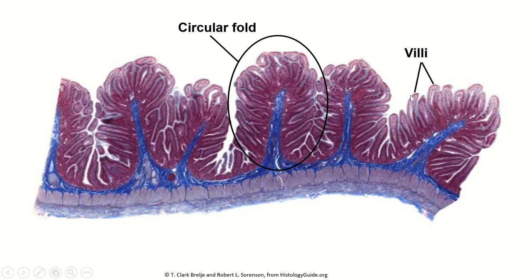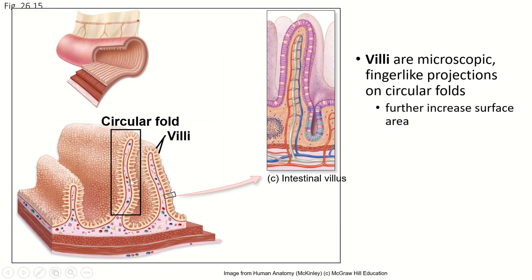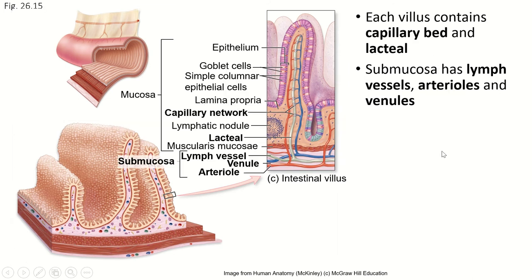The structures on top that make up the mucosa — these little finger-like projections — are called villi. Each circular fold is covered with these tiny villi that provide even more surface area for absorption. Each villus has a capillary bed inside of it, and inside that it has a lacteal.